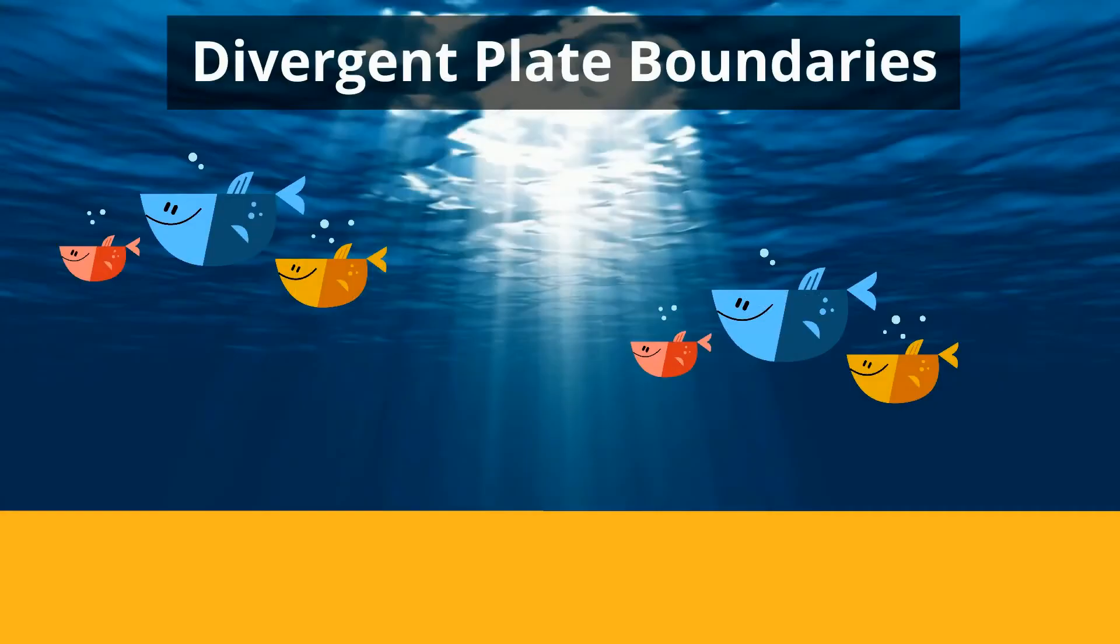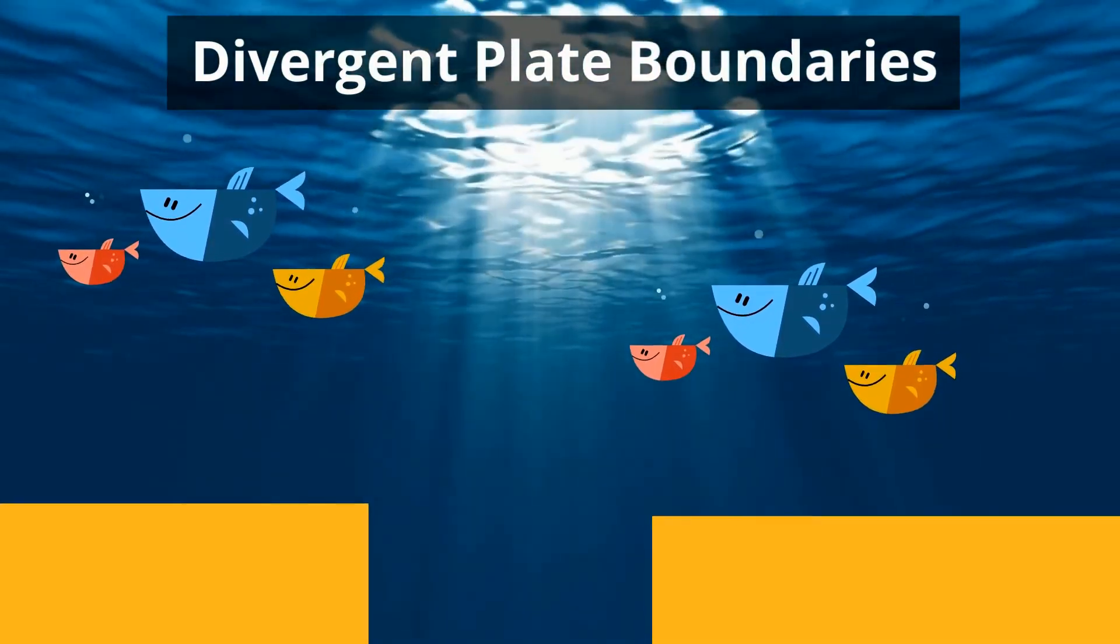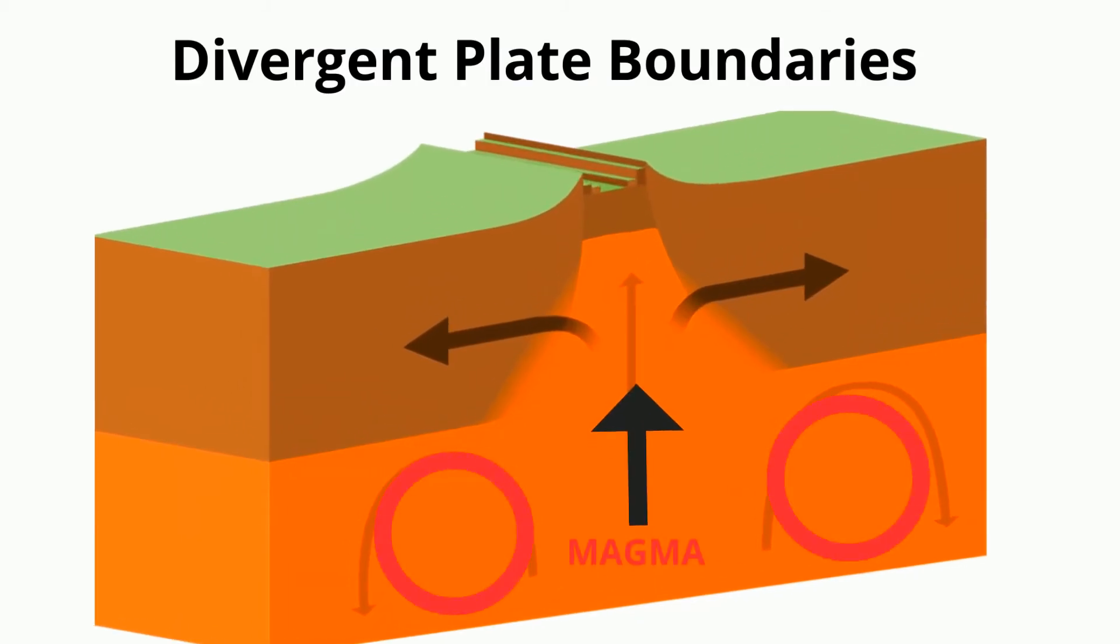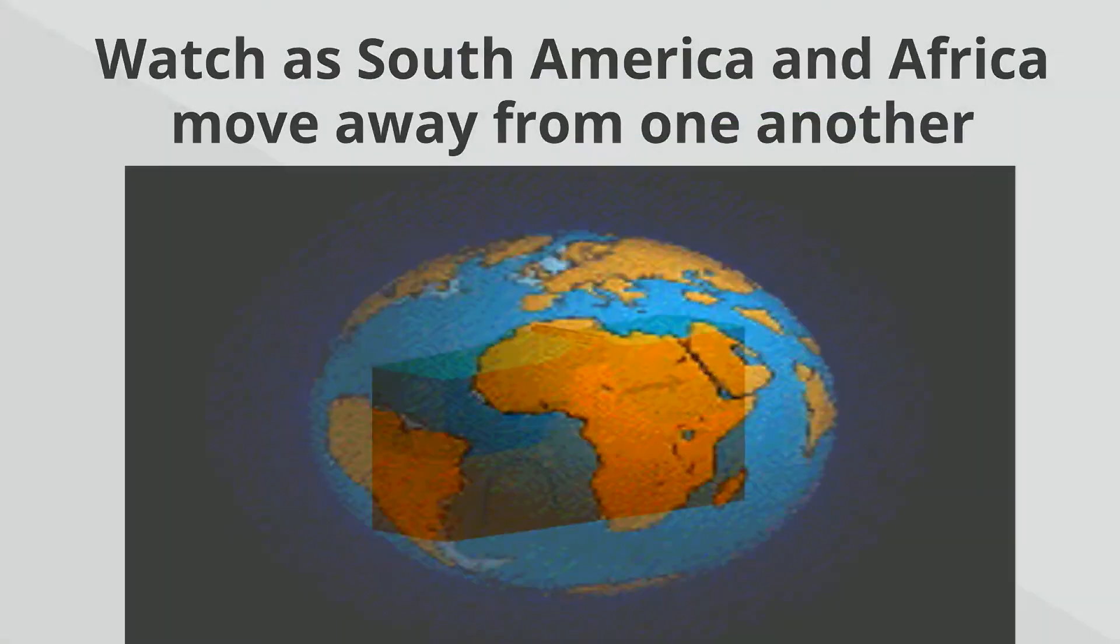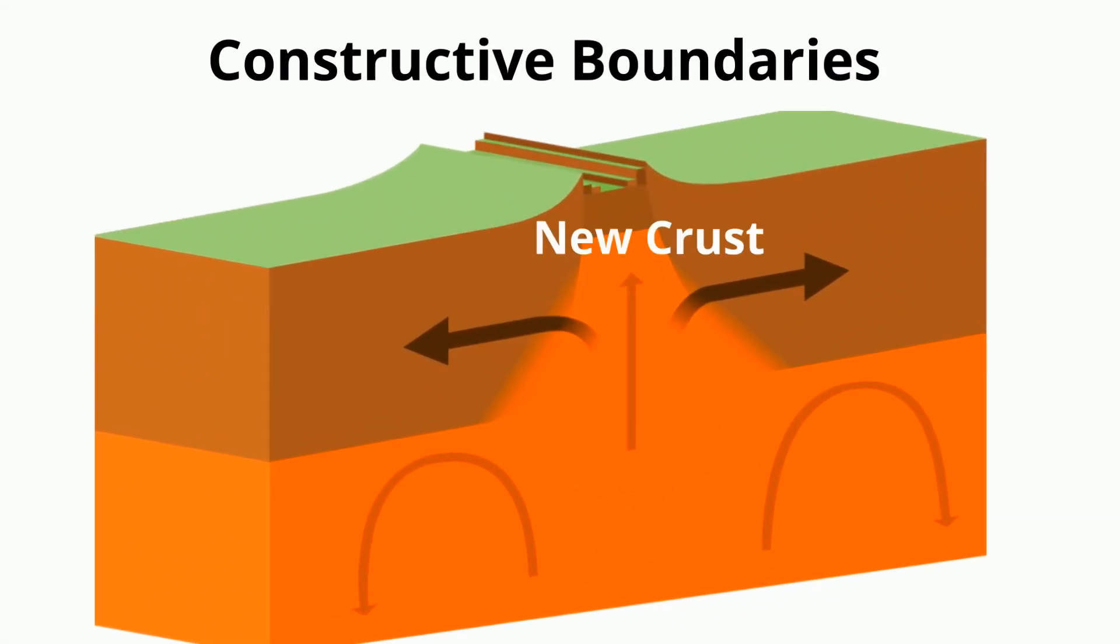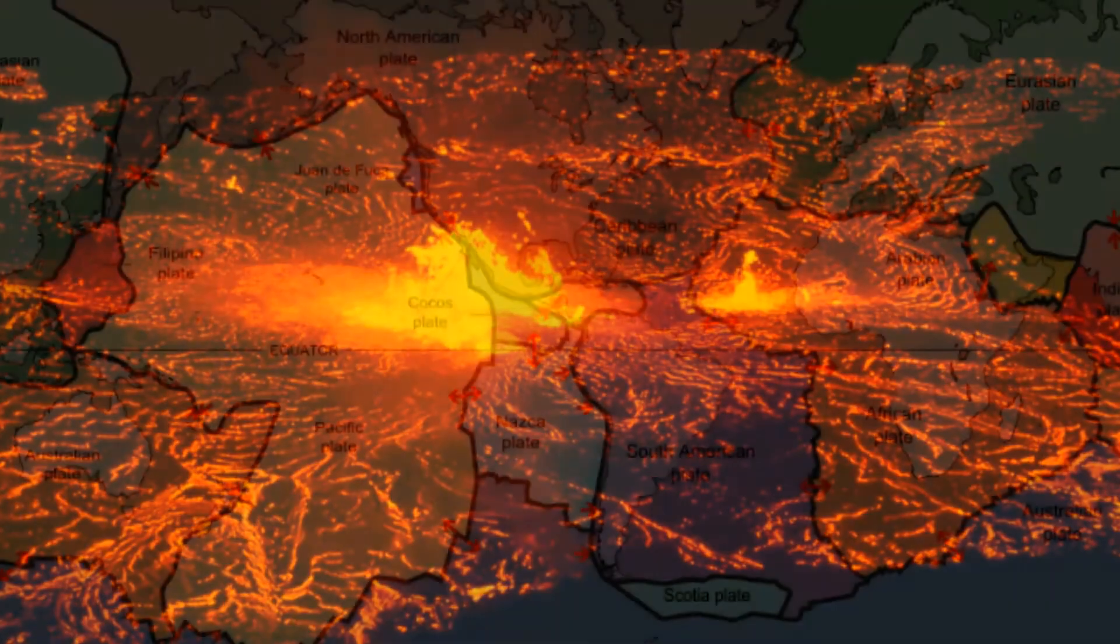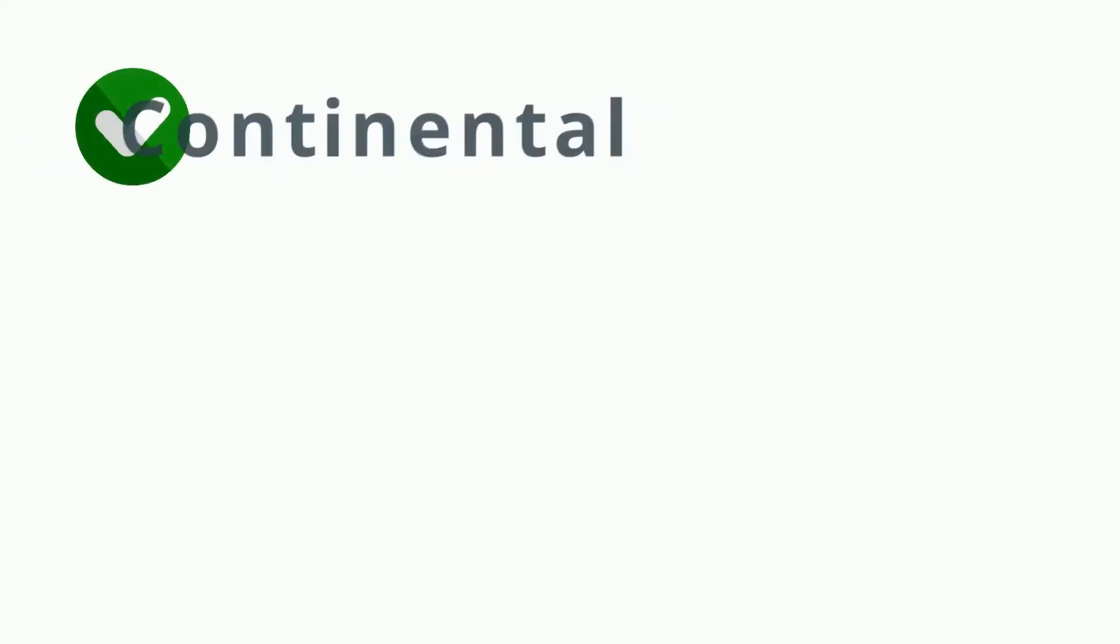Divergent plate boundaries occur when huge tectonic plates move away from one another. This occurs above rising convection currents. The rising magma pushes up on the bottom of the lithosphere and flows laterally beneath it. This lateral flow causes the plates to move in the direction of the flow. At the plate's boundary, the two plates move in opposite directions. Divergent boundaries are constructive boundaries because new crust forms. As the plates move apart, molten magma fills in the gap and creates new crust. If you look at the map of the major tectonic plates, you can see several divergent plate boundaries.